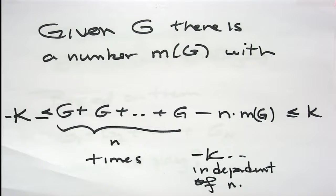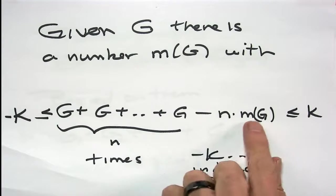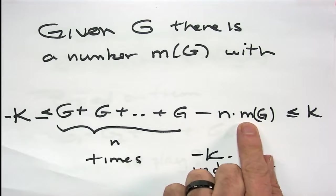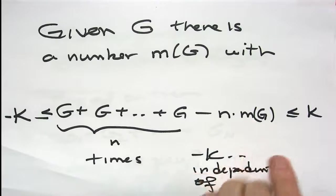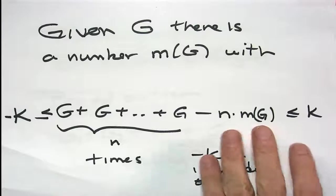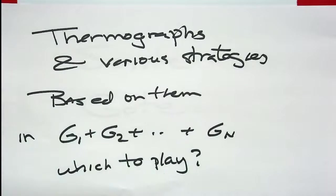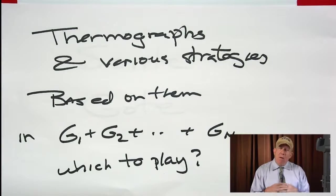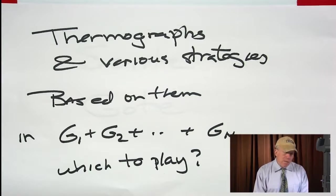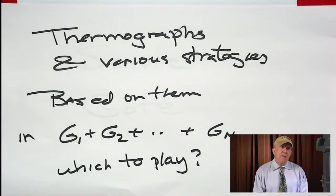This is called the mean value theorem, and analysis of this together with the actual construction of the calculation of the mean value, called the thermograph, allows us to have a number of strategies that are not optimum, but are actually computable, and in some sense within a bound of being optimum.